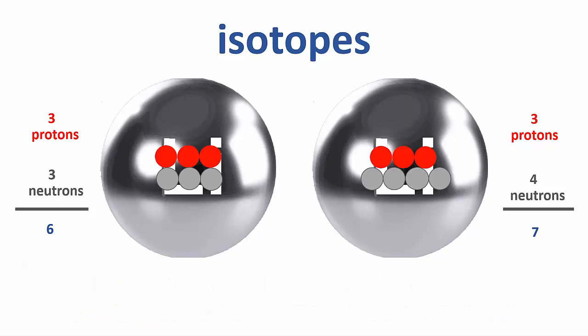To tell them apart, scientists write the left isotope lithium-6 and the right isotope lithium-7. This number is called the mass number and is just the sum of the protons and neutrons. Because we can only have a whole number of protons and neutrons, the mass number is always a whole number.